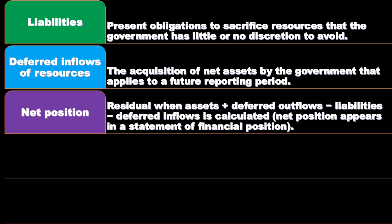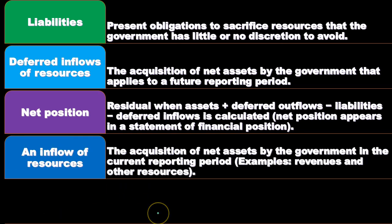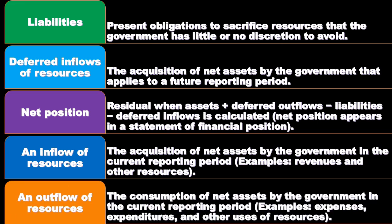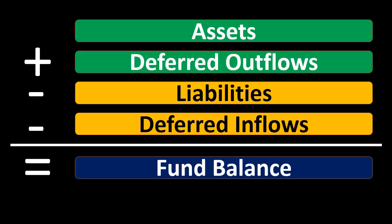Net position appears in a statement of financial position, which is equivalent to equity on a for-profit balance sheet. Then we have inflow of resources — the acquisition of net assets by the government in the current reporting period — with examples including revenue and other resources. Then we have outflow of resources, the consumption of net assets by the government in the current reporting period. Examples include expenses, expenditures depending on whether we're on an accrual or modified accrual basis, and other uses of resources.